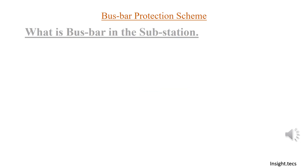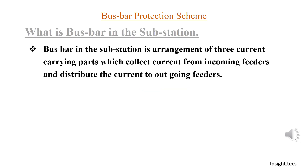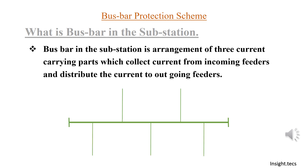So what is a busbar in the substation? A busbar is a junction point in which incoming feeder current is distributed to the outgoing feeders. Equal numbers of incoming and outgoing feeder distributions are done at this junction point, which is called the busbar.